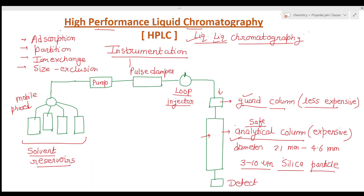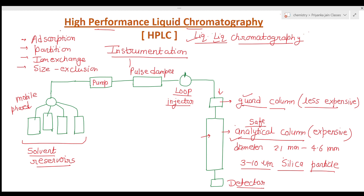At the end of the instrumentation there is a detector. The most important detector used in HPLC is the spectroscopic detector. When using a UV-visible detector, the chromatogram is a plot of absorbance versus elution time. That covers the instrumentation.